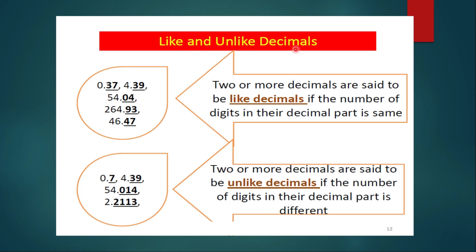First of all, we must know what are like and unlike decimals. As you can see: 0.37, 4.39, 5.042, 264.93, 46.47 — all these numbers have two digits after the decimal. Numbers after the decimal are called the decimal part. Since there are two digits in the decimal part of each number, these are known as like decimals. The definition: two or more decimals are said to be like decimals if the number of digits in their decimal part is the same.